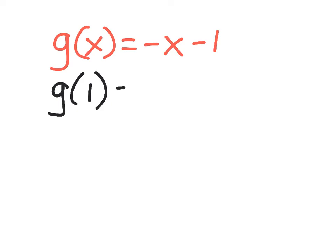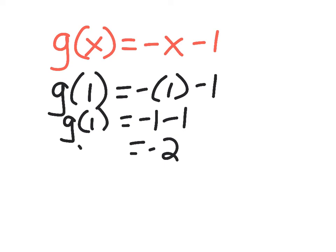So let's say I now have g of x equals the opposite of x minus 1. And I want to know the value of the function g at 1. So I'm going to replace my x with my input of 1. So I have negative 1 minus 1, or negative 2. So the value of this function at 1 is negative 2.